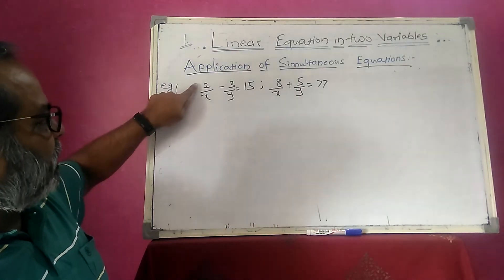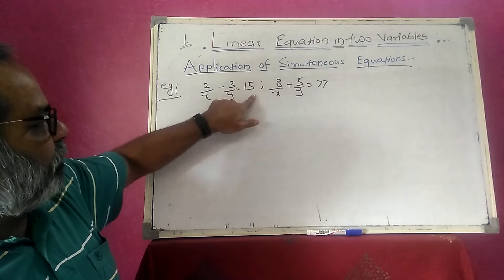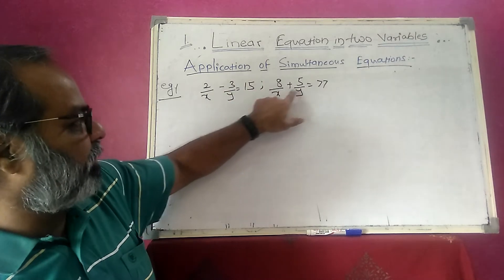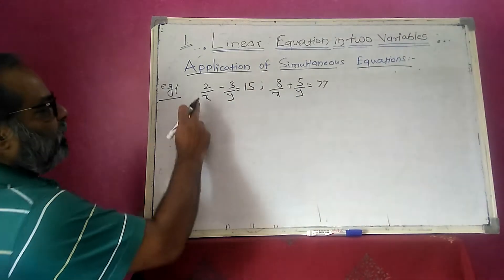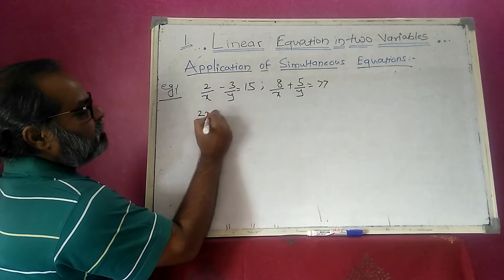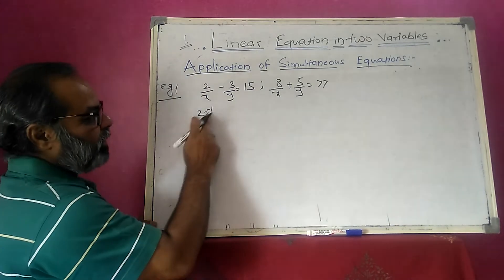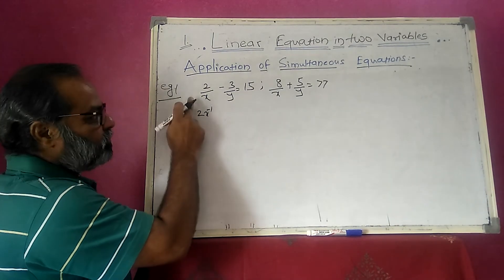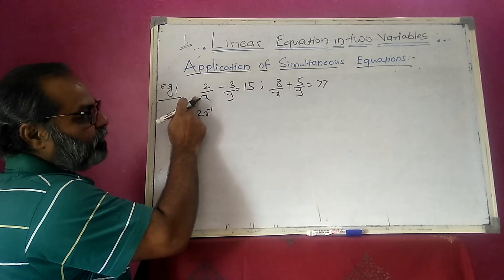Look at this equation: 2/x minus 3/y is equal to 15, and 8/x plus 5/y is equal to 77. Here, 2/x means 2 times x raised to minus 1, so x raised to minus 1 is not linear. Therefore, at present, this is not a linear equation.